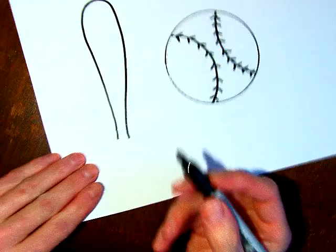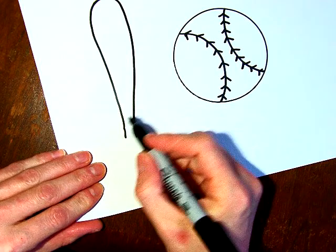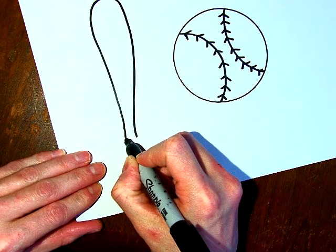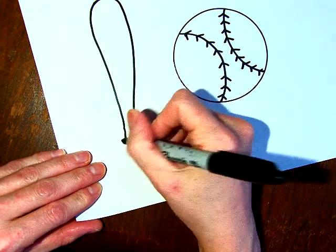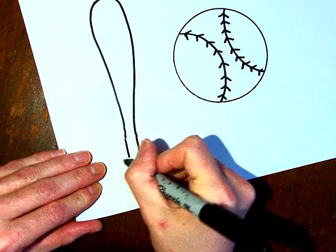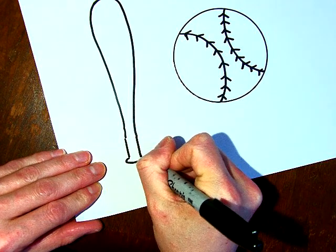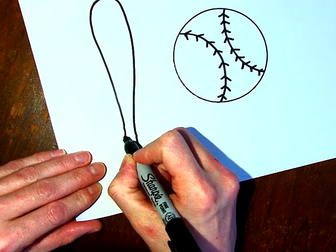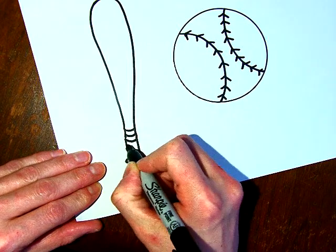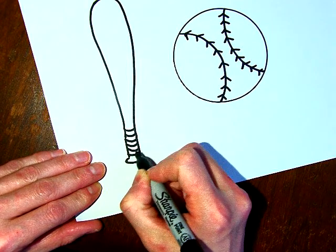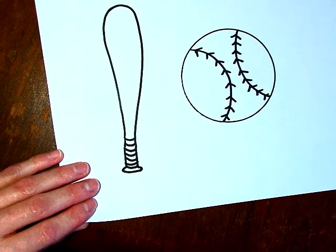And then this is the tricky part. Down here, we're going to create the handle. Let's draw two straight lines, and then at the bottom of that, kind of a little knob. And then here, we're going to make that grip. And there we have it.